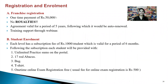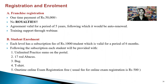For franchise registration, there is a one-time payment of rupees 50,000 with no royalties required. The agreement is valid for five years and will be auto-renewed, with training support provided through webinars. For student enrollment, each level has a subscription fee of rupees 1,000 per student, valid for six months. Each student will receive unlimited practice sums on the online portal, a 17-rod abacus, a bag and a t-shirt with the Extra Genius logo, and a free one-time online exam registration, for which the usual fee is rupees 500.